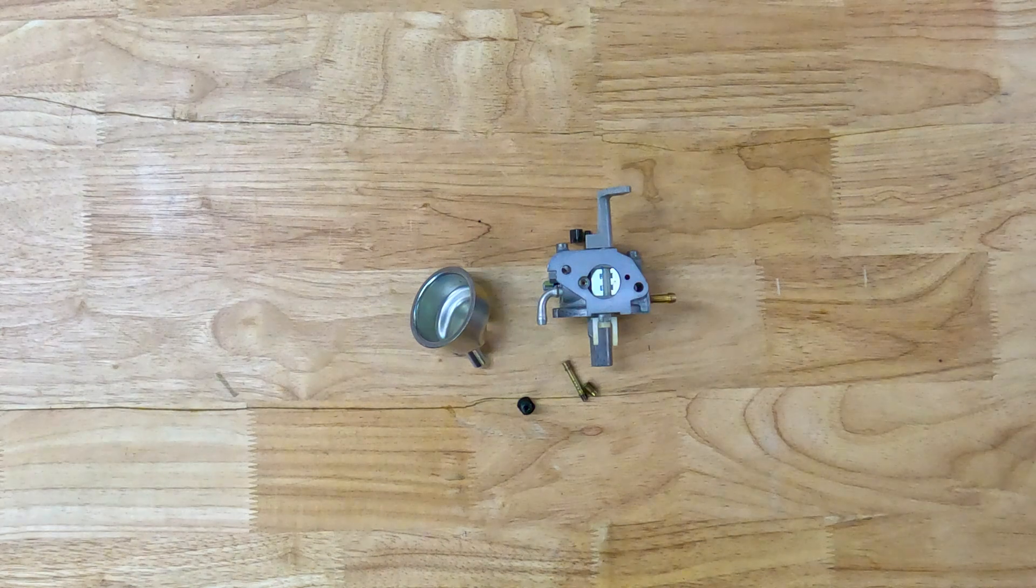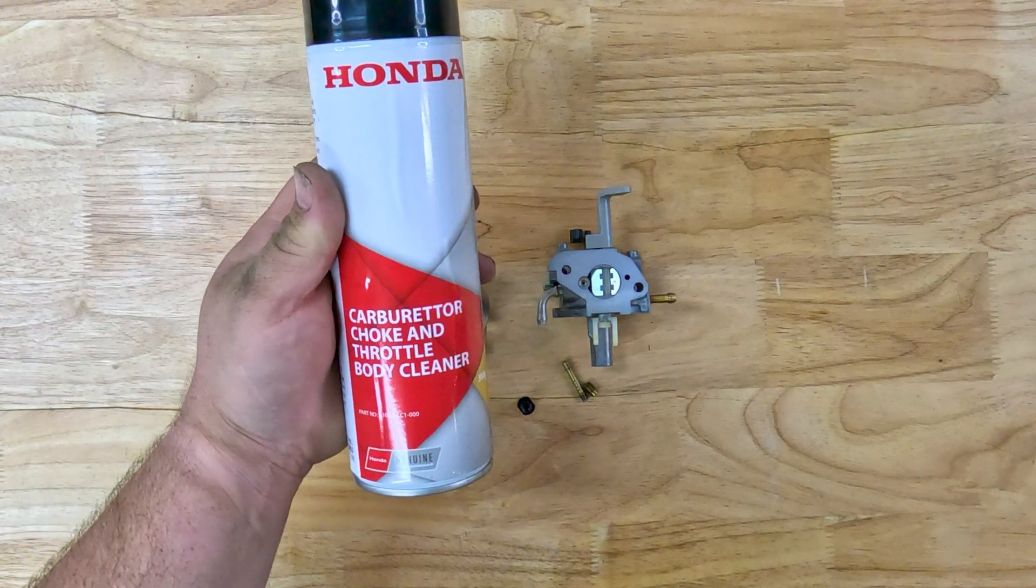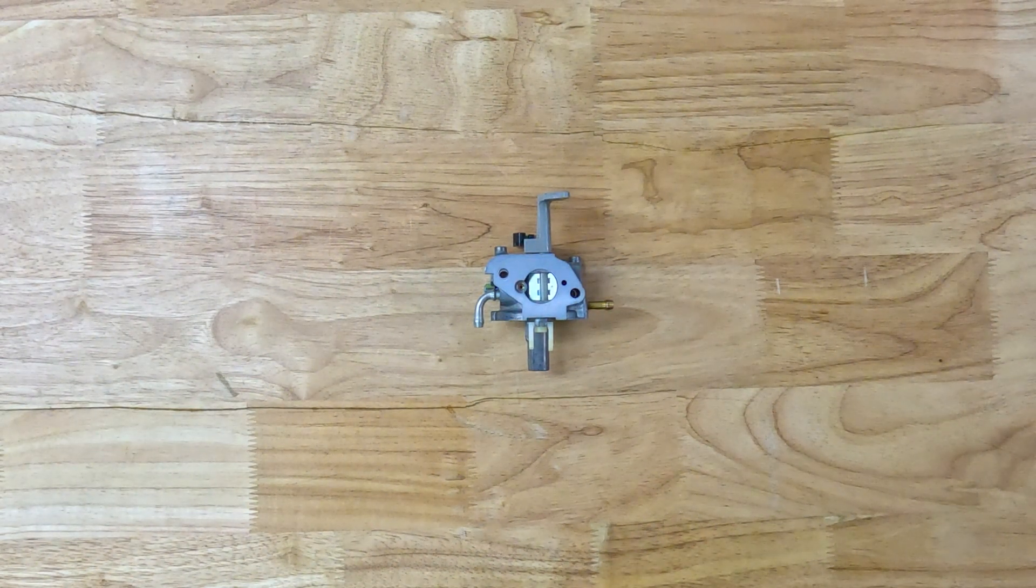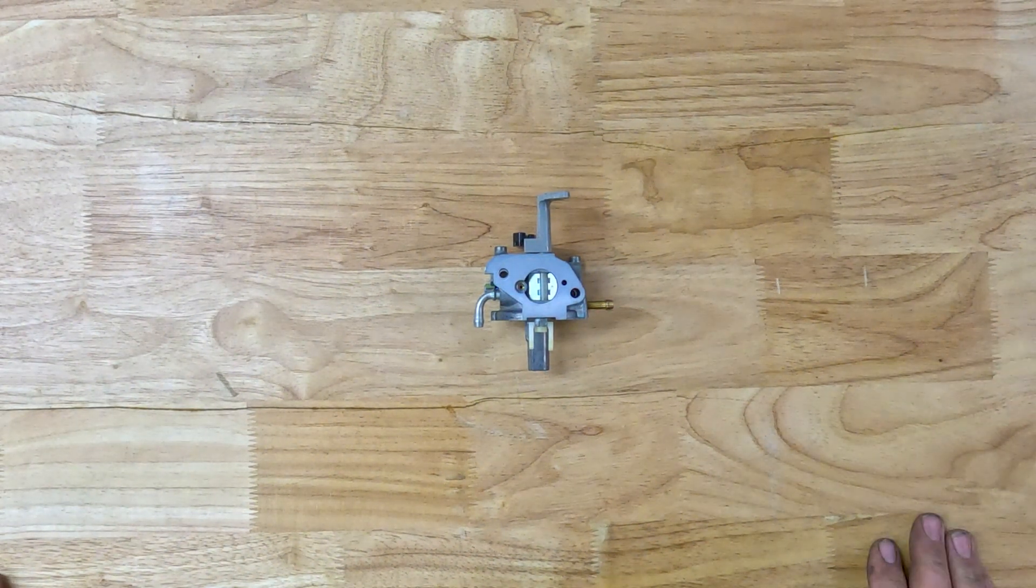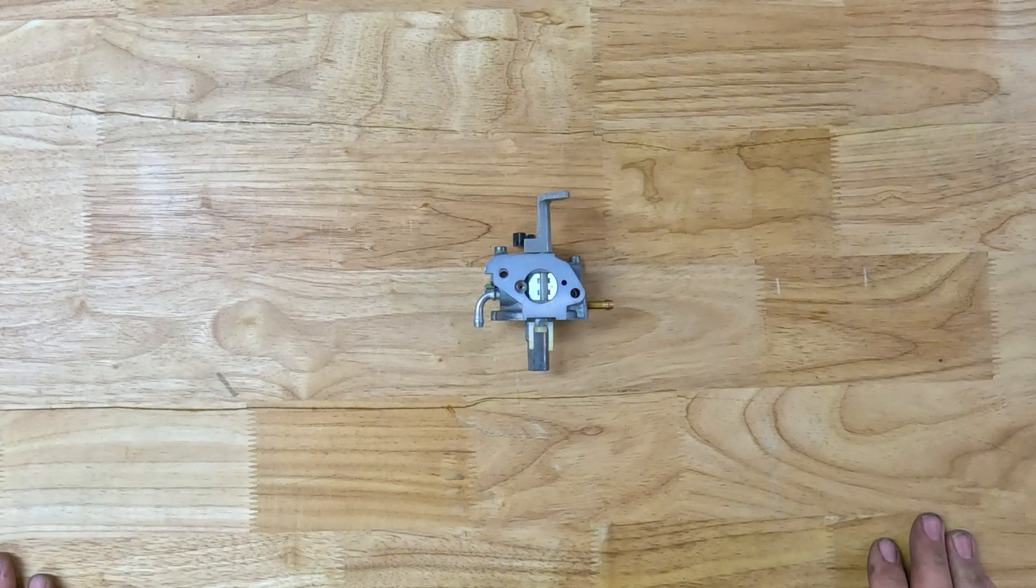All these parts will need to be cleaned thoroughly, just with some carburetor cleaner or brake cleaner in an aerosol can works perfectly. Now that the carburetor is all clean, we are ready to rebuild it. Just make sure your workspace is nice and clean when rebuilding to save any contaminants getting into the carburetor.